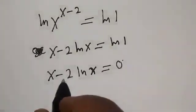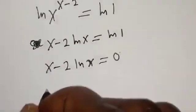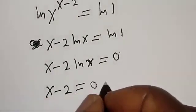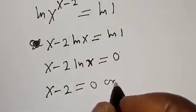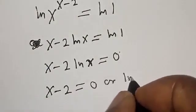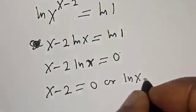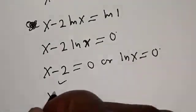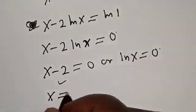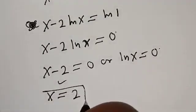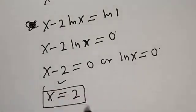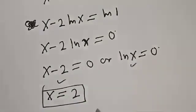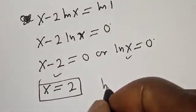Then we have two cases here: s minus two is equal to zero, or natural log of s is equal to zero. From the first case, s is equal to two. That is the first value of s.